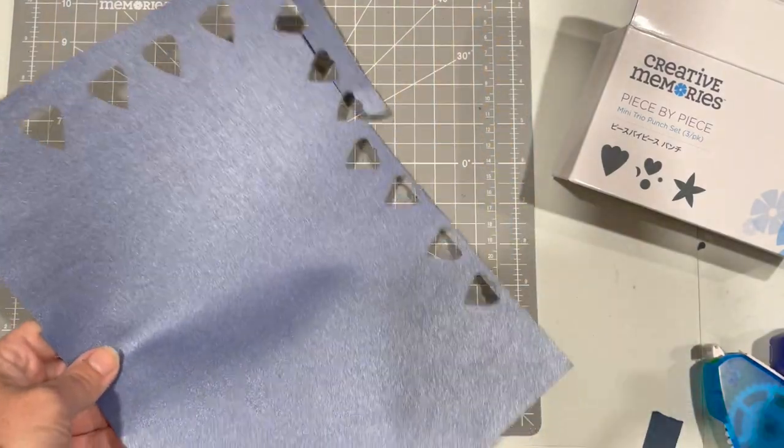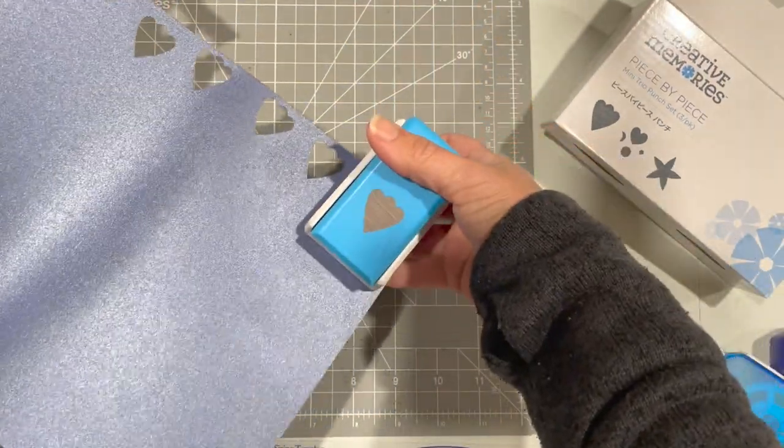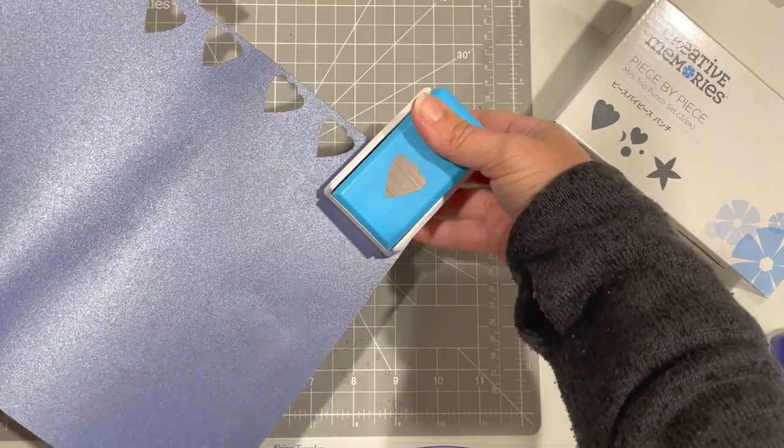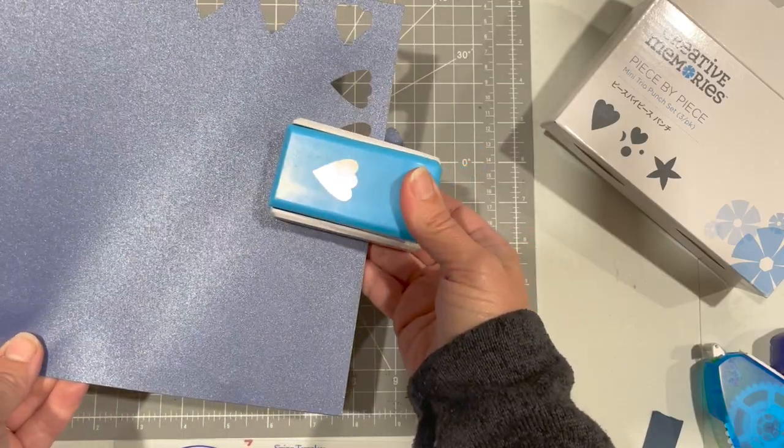So I'm going to punch with the shimmer paper because it kind of gives it a little bit of extra bling for their little outfit and I cut four.